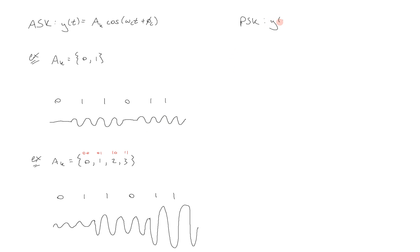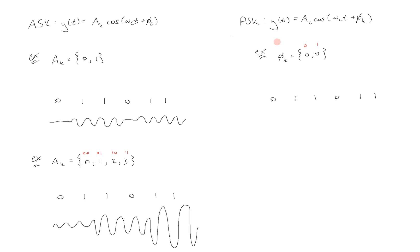With PSK, we're going to change the phase of our carrier. So it will have some fixed amplitude A sub C and it will be cosine of omega C T. The frequency of the carrier doesn't change, but the phase phi sub K will. As an example, phi sub K can equal 0 and pi. We encode one bit at a time. To transmit the message 0, 1, 1, 0, 1, 1 — a 0 phase corresponds to bit 0 and a pi phase corresponds to bit 1. The signal will go, and then at a 1 it will switch phase and flip by 180 degrees or pi, and so on.